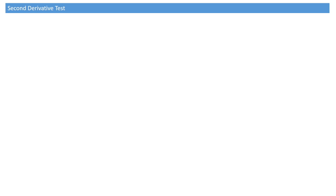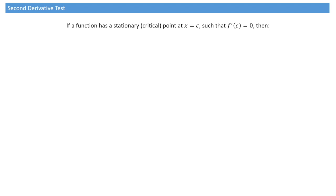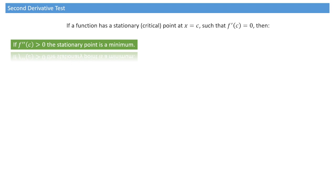The scenario is we're dealing with a function which has a stationary point, also known as a critical point, at x equals c. The first derivative, f'(x), is therefore equal to 0 at c. So f'(c) equals 0. The second derivative test states that if the second derivative at c is positive, then the stationary point is a minimum.